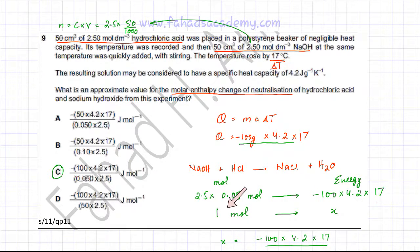So we then figured out what would be the energy change when 1 mole of HCl or NaOH were used so we found out x which came out to be equal to option C. So option C is your correct option for this question.